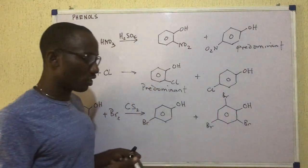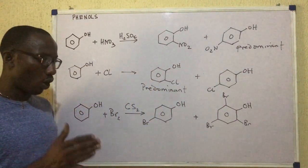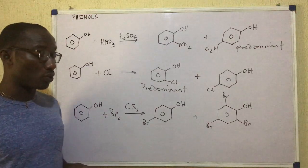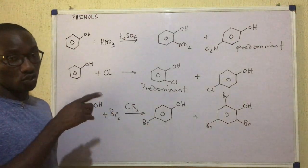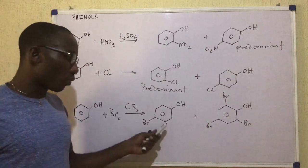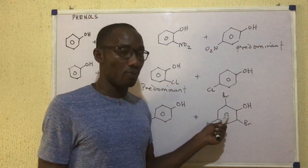This is a tri-substituted product in the ortho, ortho, and para-positions. That's like 2,4,6-tribromophenol. So we get a mixture of these two products.